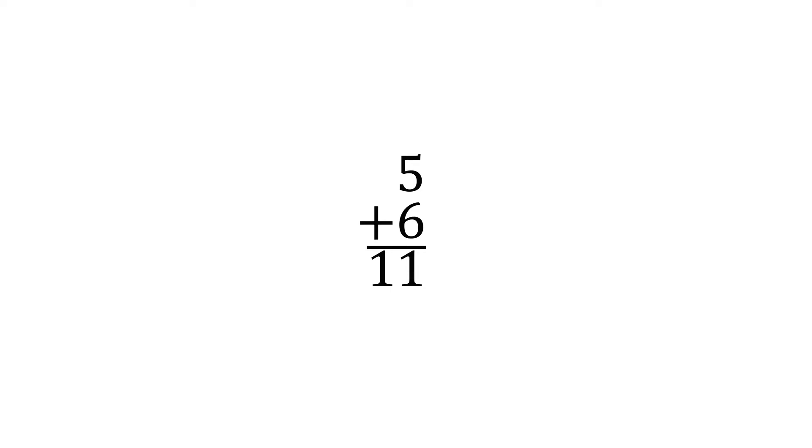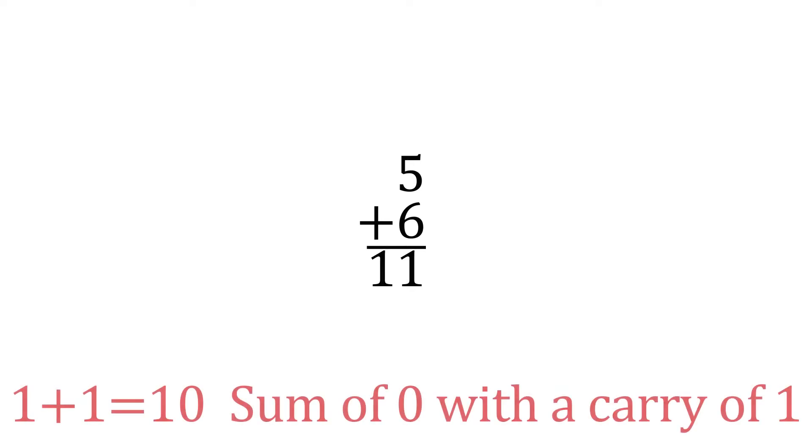Now if we add the decimal numbers 5 and 6, we get a sum of 1 with a carry of 1. In other words, we get a total of 11. Binary numbers work exactly the same way, except that there are only the two digits, 1 and 0. This is where the fourth basic rule comes from.